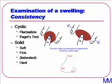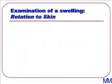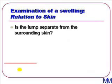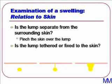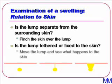Indurated is another descriptor of consistency, and probably fits between hard and firm. We often use this to describe tissue that is inflamed and therefore indurated. When assessing the relationship of a lump to the skin, we need to ask two questions: is the lump separate from the overlying skin, or is it tethered or fixed to the skin? If you are able to pinch the skin overlying the lump without moving the lump, then it is separate to the skin. When you try and move the lump independent to the skin, does it create a little dimple suggesting tethering, or does it not move at all, suggesting fixation?